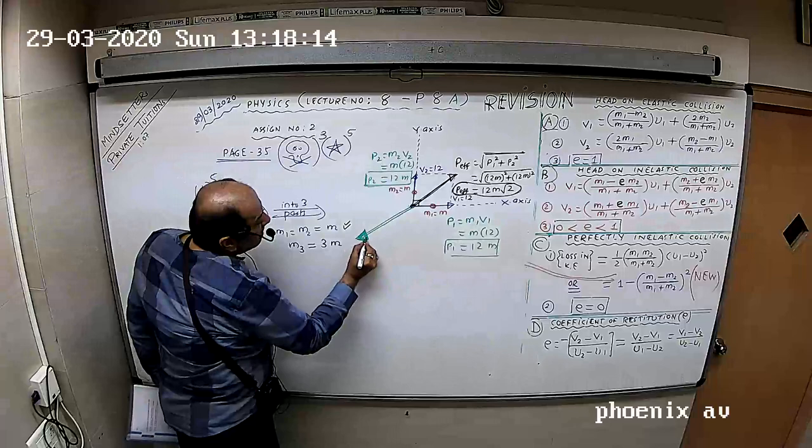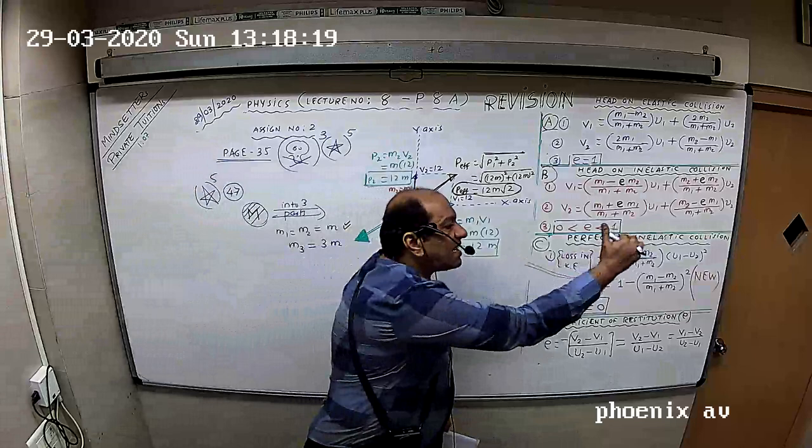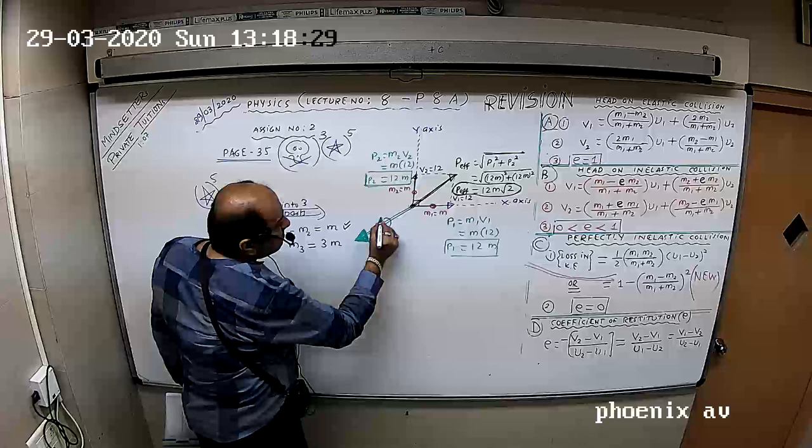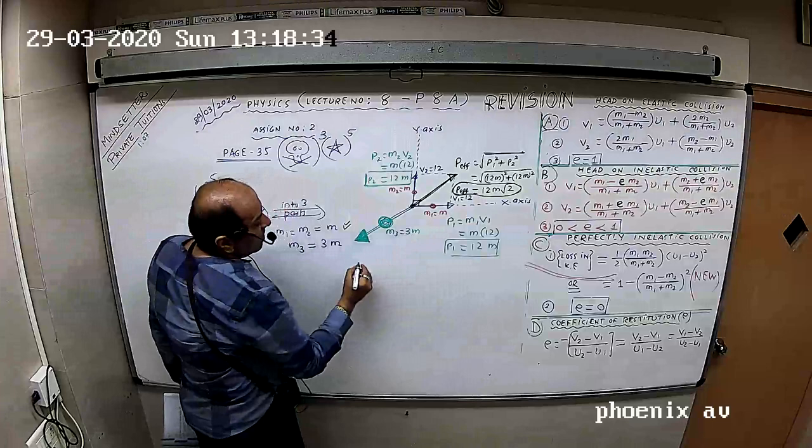If this momentum has to be balanced, the third momentum should be in this direction. The third part should go in the opposite direction. The third mass is 3M. V3 we don't know, but P3 is M3 times V3, that means 3M times V3.